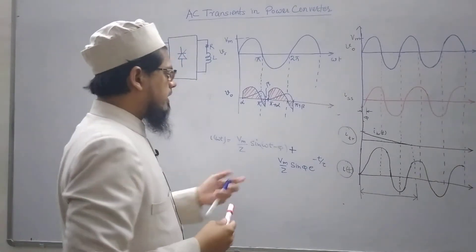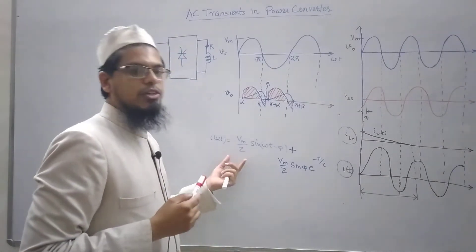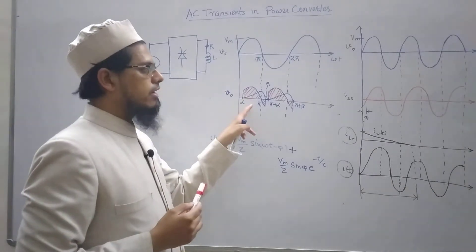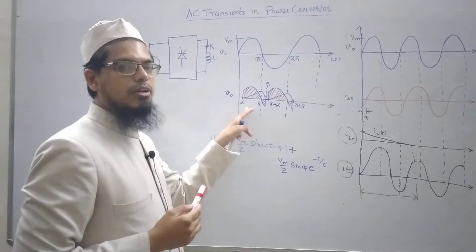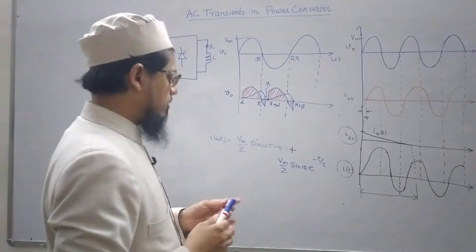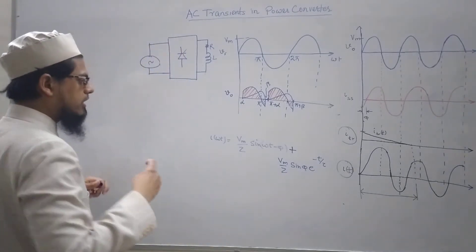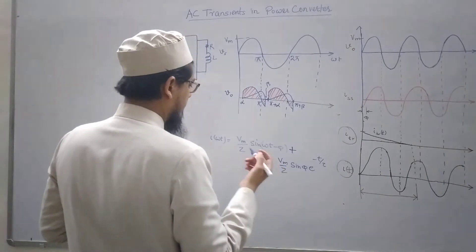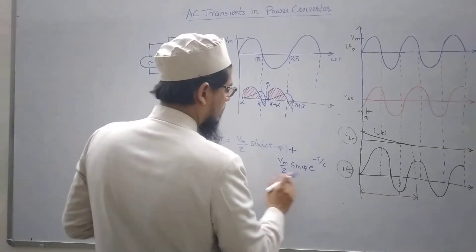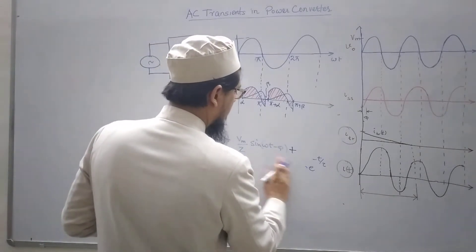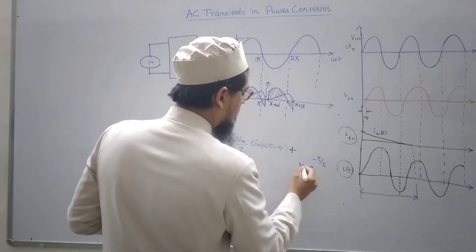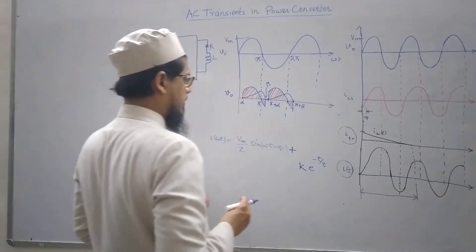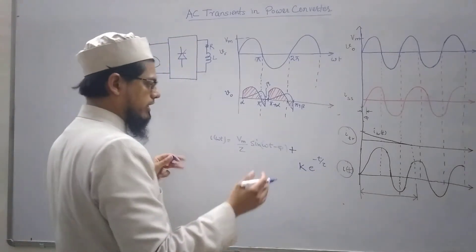I was telling you that this is not the expression for current in this case. So how to find it out? We know that the general expression for the current is, so in place of this I can write here k times this. This is the general expression for current.